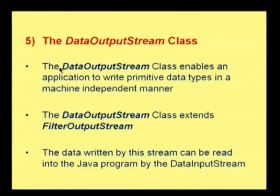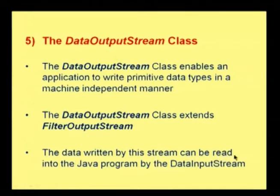Next is about the DataOutputStream class. The DataOutputStream class enables an application to write primitive data types in a machine-independent manner. The DataOutputStream class extends FilterOutputStream. The data written by this stream can be read into a Java program by DataInputStream. There are two types of data: primitive data and non-primitive data. Primitive data includes all basic data types like int and float.